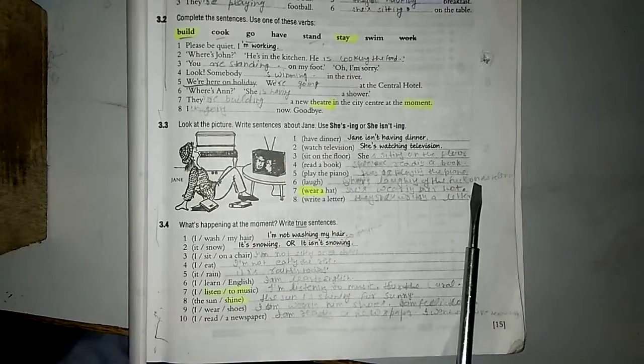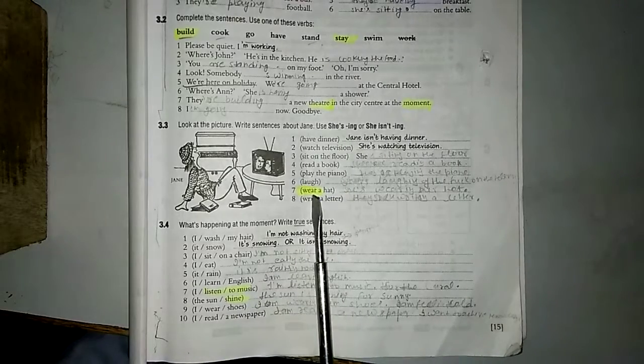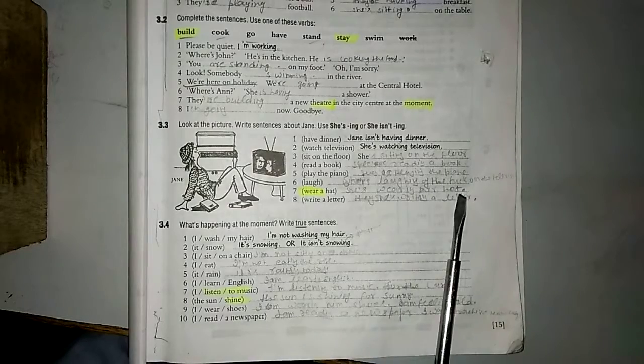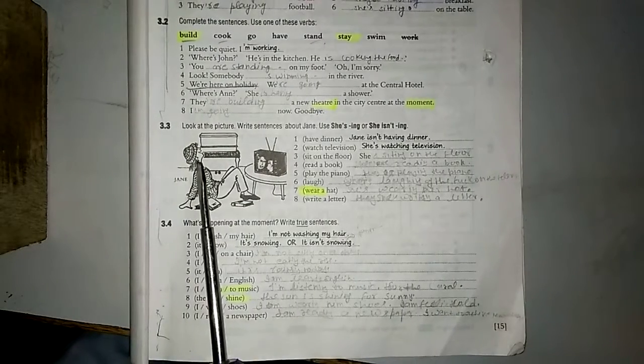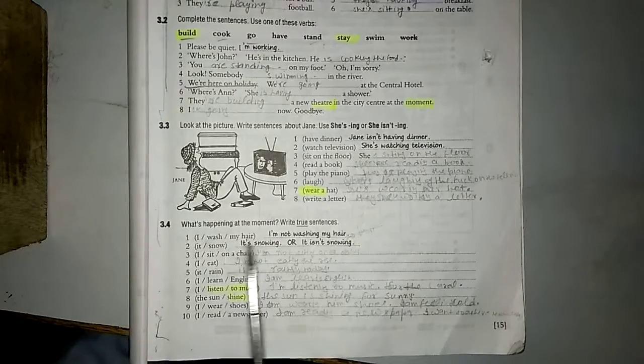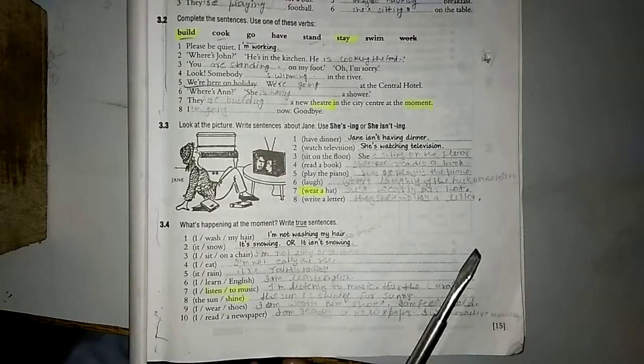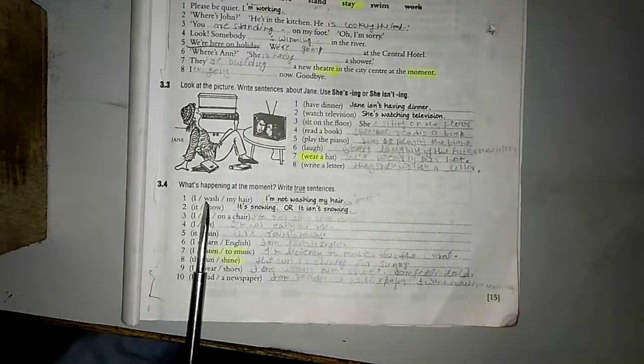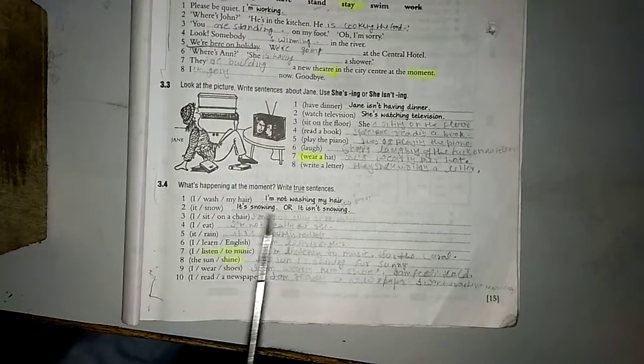She is laughing. She is laughing. She is wearing her hat. She is not writing a letter. I am washing my hair. I am not washing my hair. It is snowing.